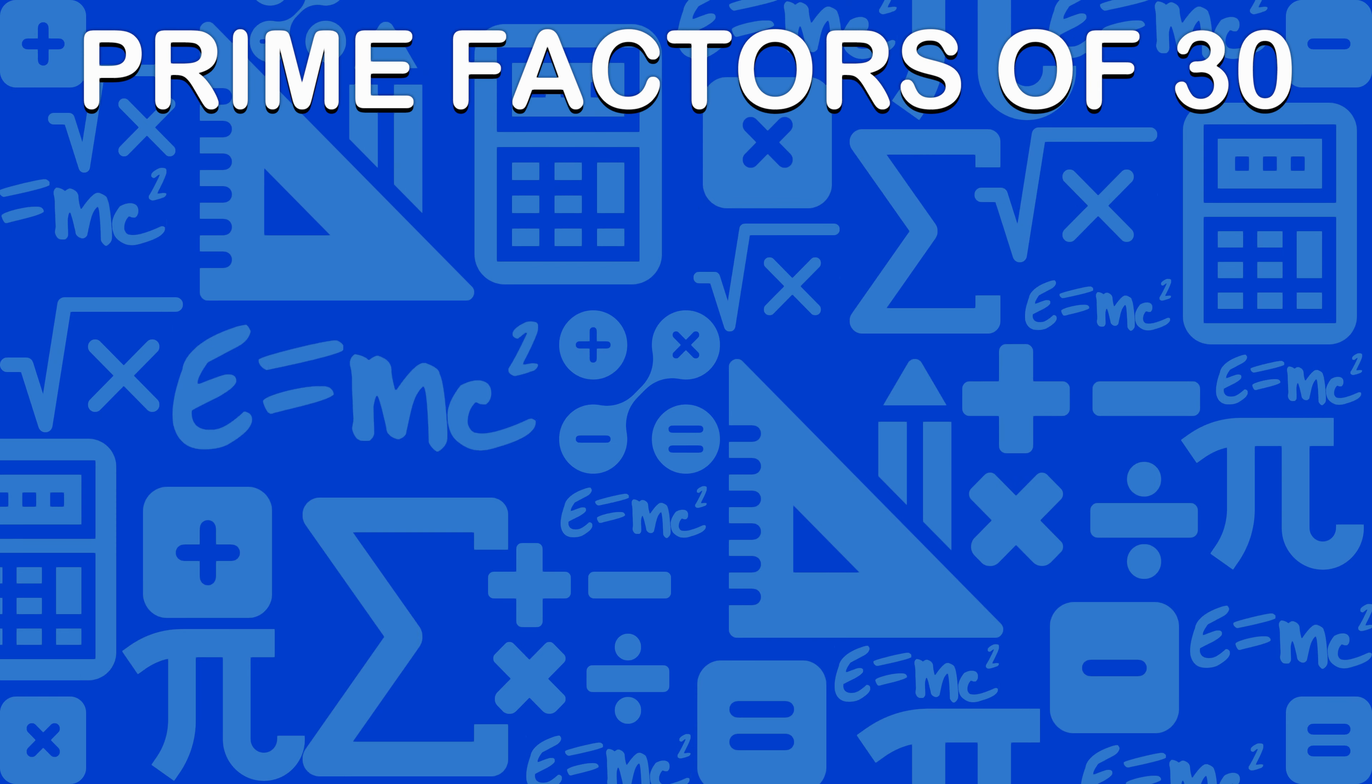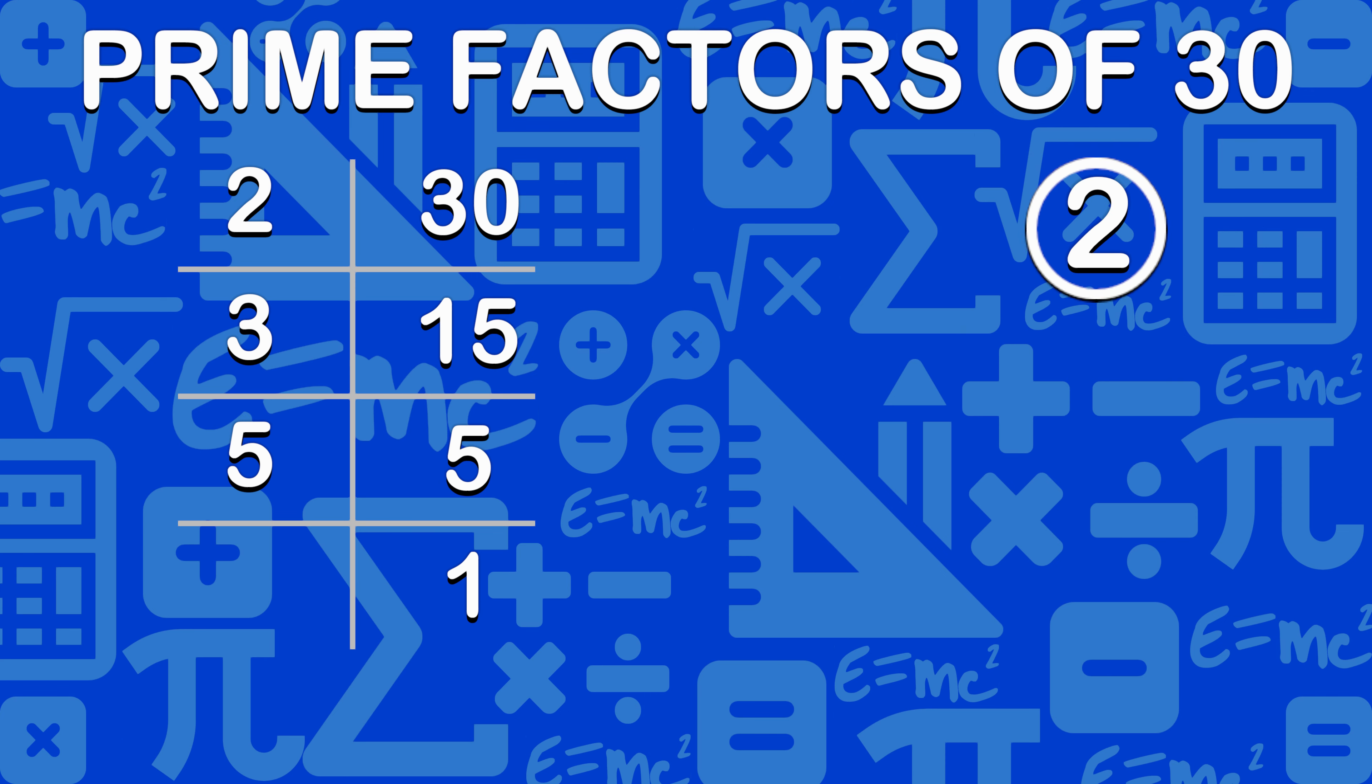To find prime factors, we need to divide it by prime numbers until we cannot divide any more. Prime factors are prime numbers that, when multiplied together, equals to 30. In this case, the prime factors for 30 are 2, 3, and 5.